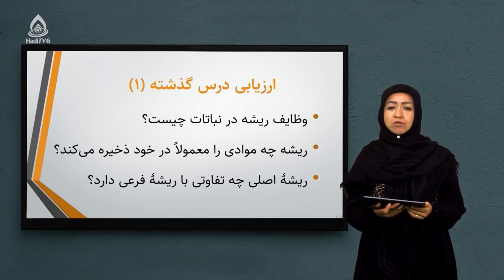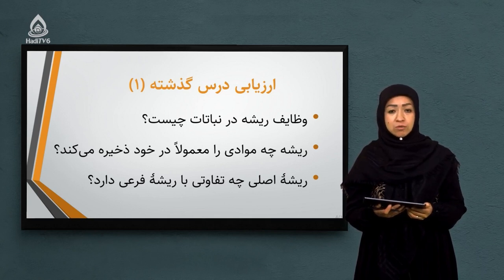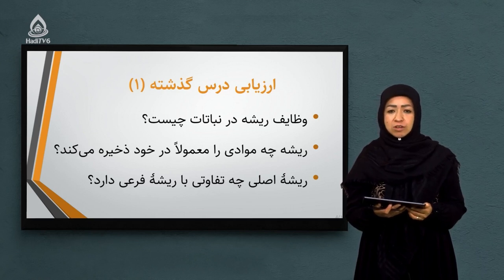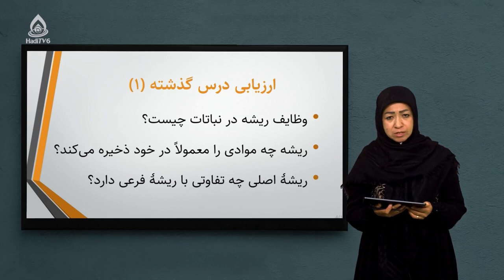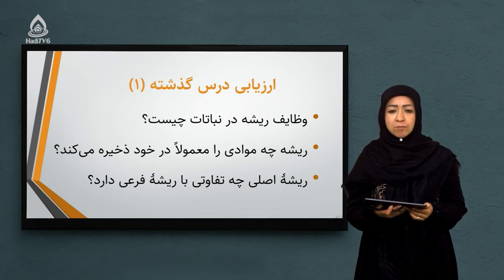سوال دوم: ریشه چه موادی را معمولاً در خود ذخیره میکند؟ در جلسه گذشته به دو نوع مواد اشاره کردیم: یک، گلوکوز؛ دو، نشاسته. گلوکوز و نشاسته موادی هستند که در فرایند فوتوسنتز یا ترکیب ضیایی تولید میشود. گلوکوزهای اضافی به صورت نشاسته در ریشه بعضی از نباتات ذخیره میشود، در بعضی در ساقه، و در بعضی از برگ آنها استفاده میکنیم.